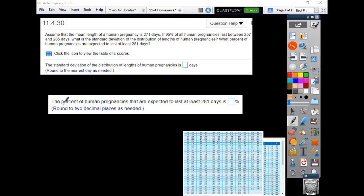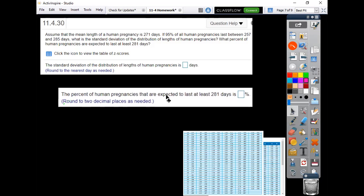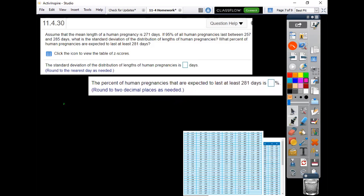So remember, 95% takes into account two standard deviations above and below, using what they call the empirical rule. Let's mark this out - so normal distribution, mean down the middle, and the mean is 271.